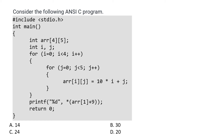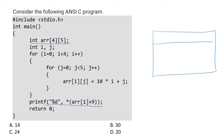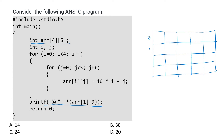This is a C programming question. We have been given a code and we need to determine what will be the output printed by that. The code is declaring a four cross five two-dimensional array called arr, so that array will have four rows and five columns. The indexes will be 0, 1, 2, 3 for rows and 0, 1, 2, 3, 4 for columns.